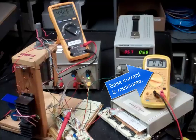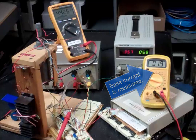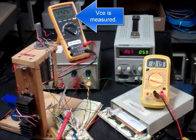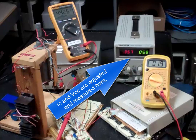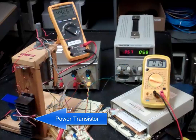Base current is measured. Collector current is measured. Collector current and VCC are adjusted and measured here. There's the power transistor.